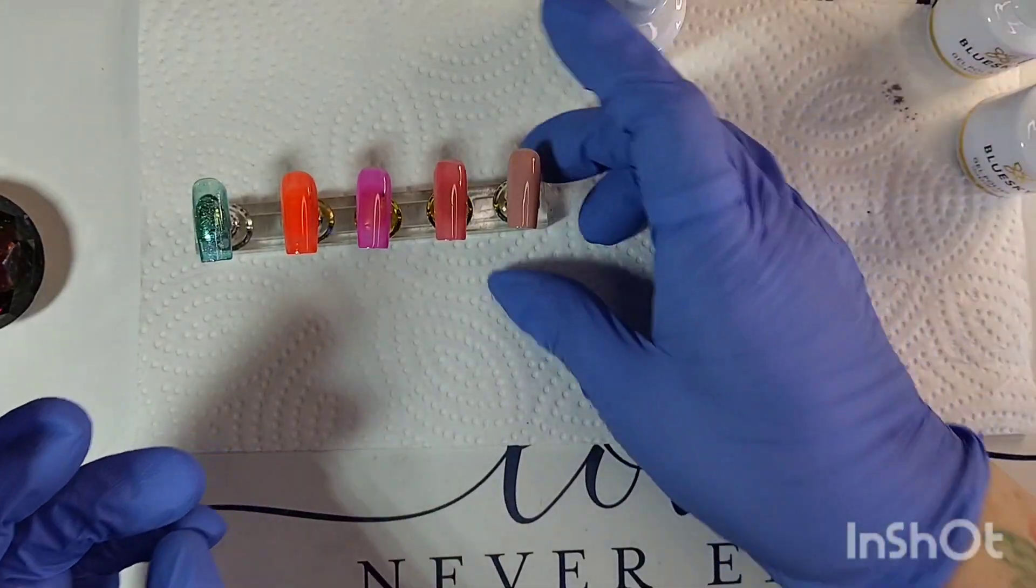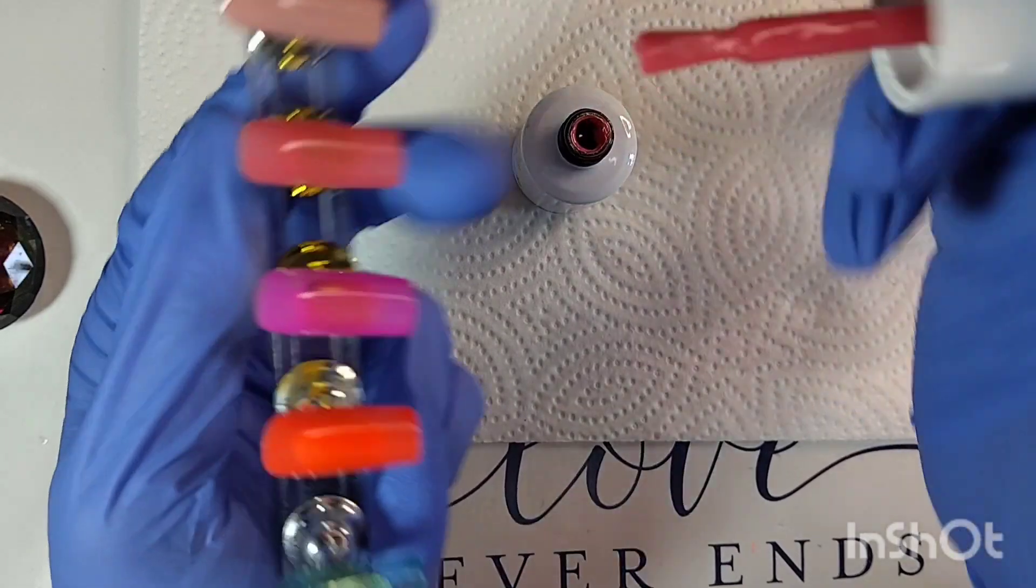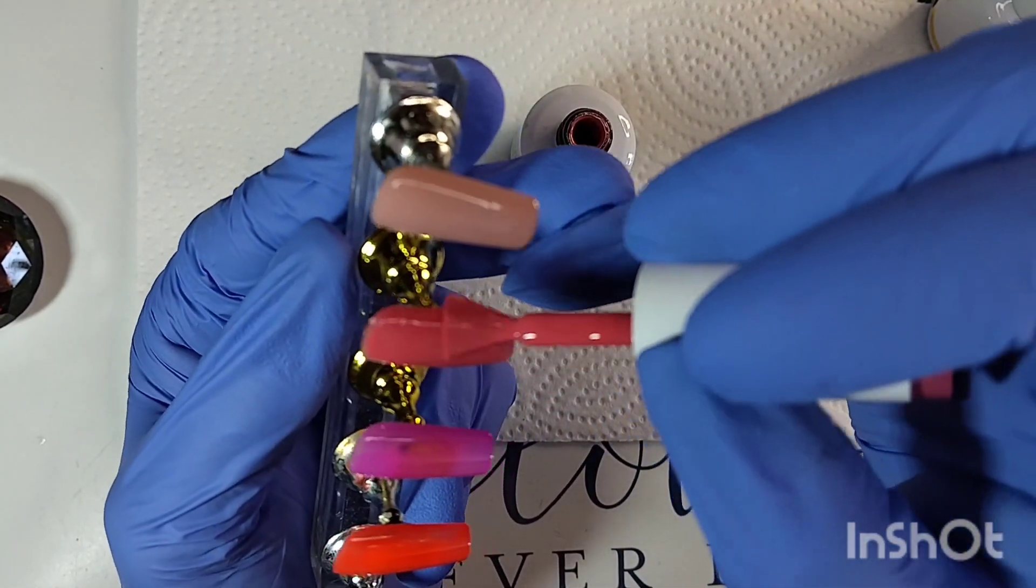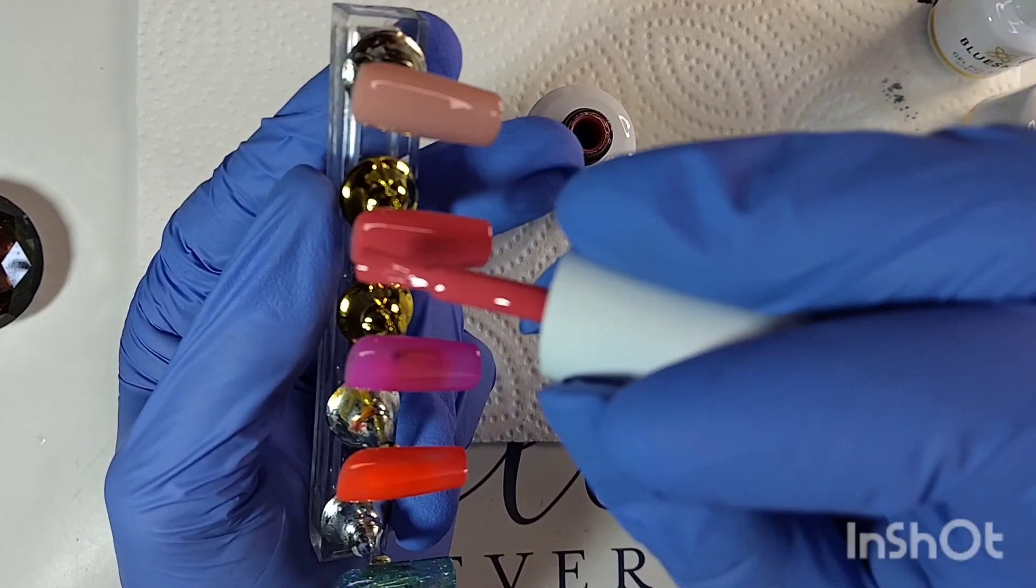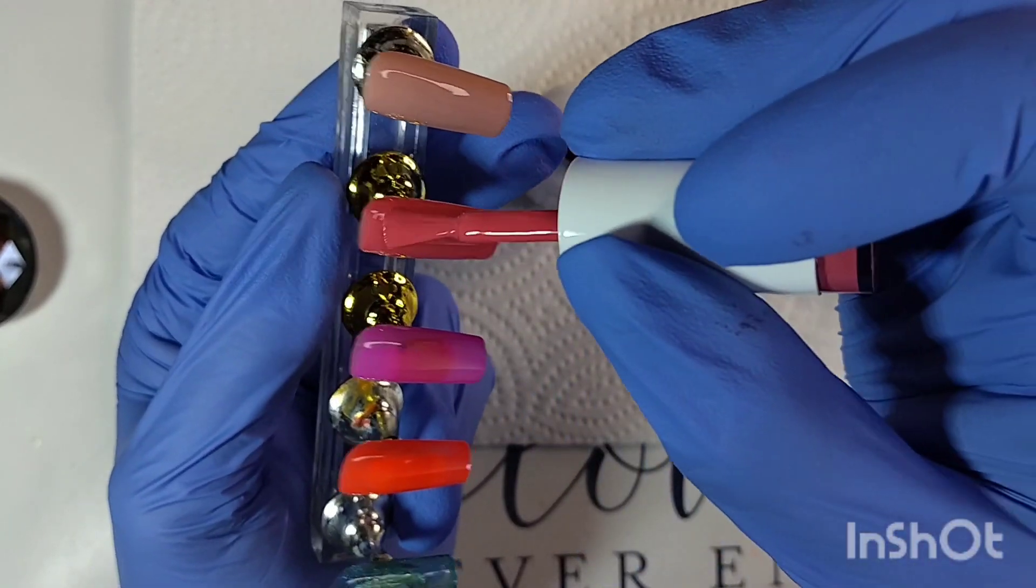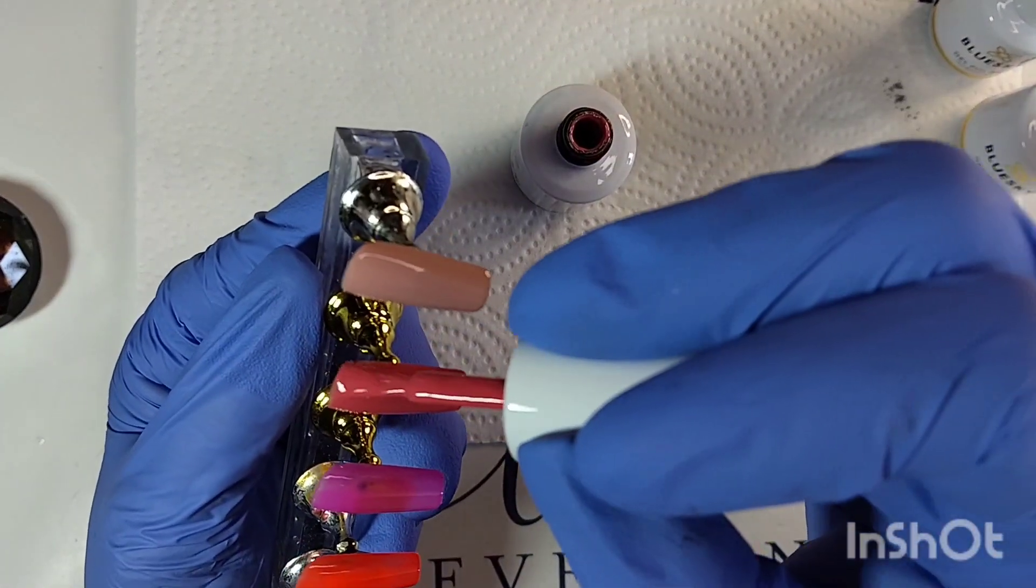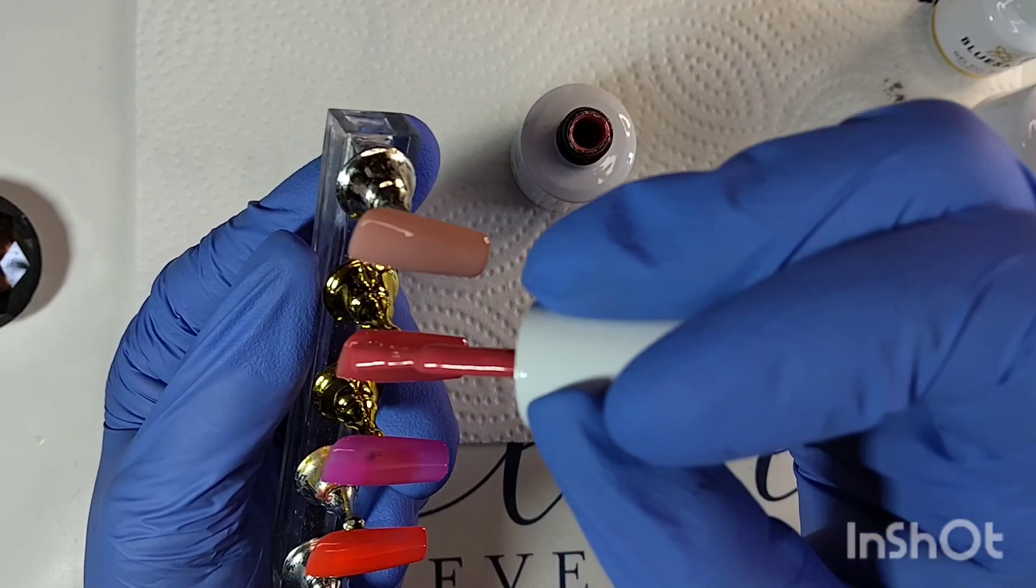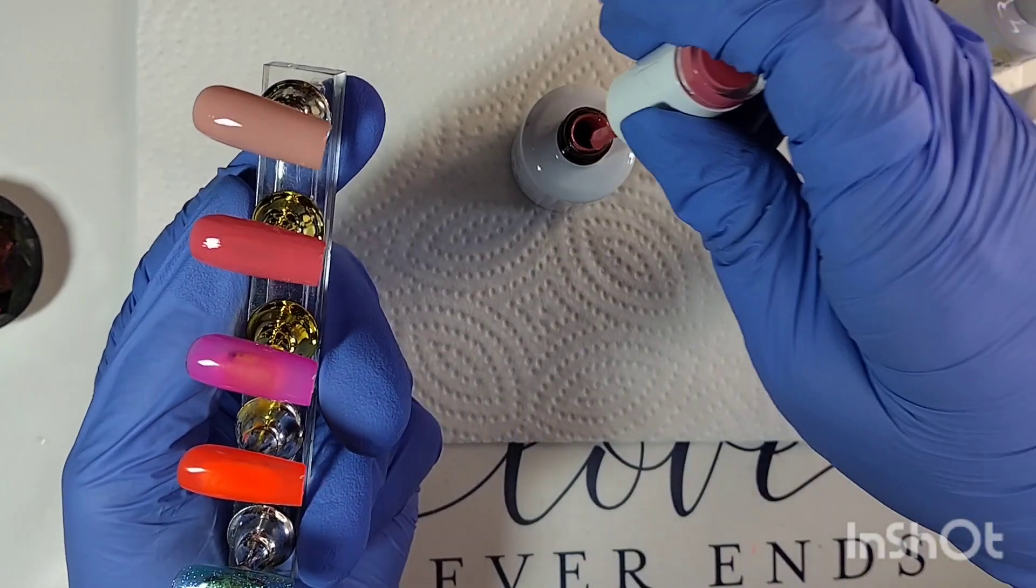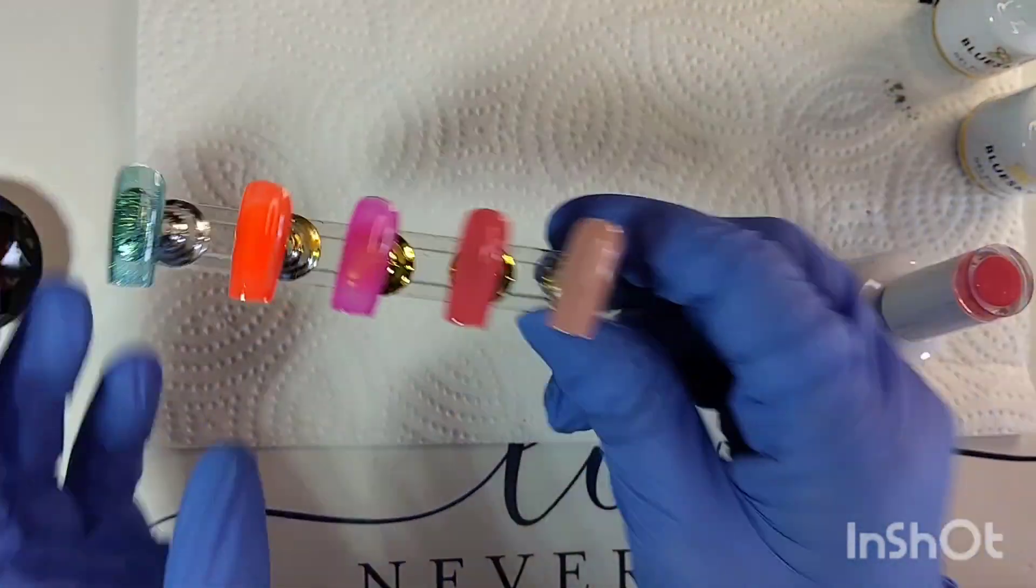Next we have Tropics. It's that mauvy-pinky kind of color to it, almost like it seems like it has a tinge of orange in there, very slightly though. That's what that looks like.